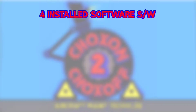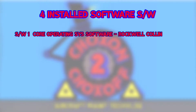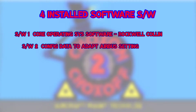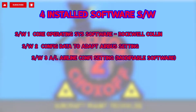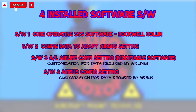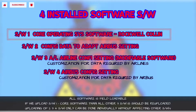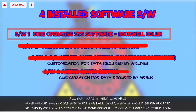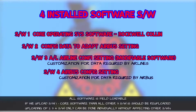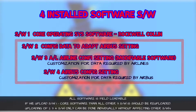The FORMAX computer is installed with four different software: core software for the operating system, configuration data to adapt Airbus settings, airline configuration setting for customization of data required, and Airbus configuration setting for customization of data required. All software is field loadable. If you are uploading number one — the core software — then all other three software are automatically deleted and have to be re-uploaded. But if you are uploading only software two, three, or four, then it can be done individually without affecting other software.